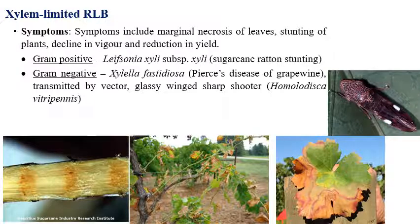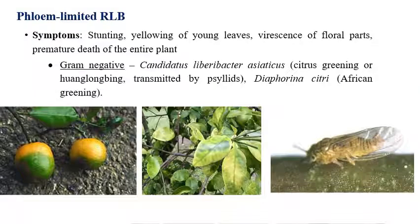To summarize: fastidious vascular bacteria are divided into xylem-limited and phloem-limited. In xylem-limited, gram-positive is sugarcane ratoon stunting caused by Leifsonia xyli subspecies xyli, and gram-negative is Pierce's disease of grapevine caused by Xylella fastidiosa, transmitted by the glassy-winged sharpshooter — scientific name Homalodisca vitripennis.